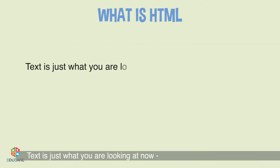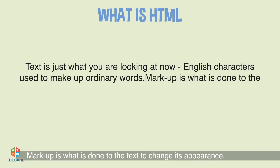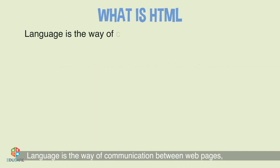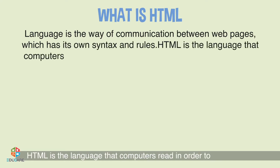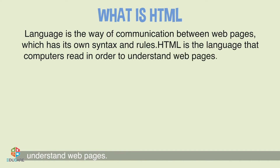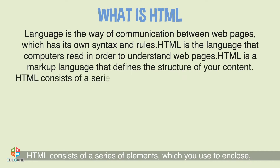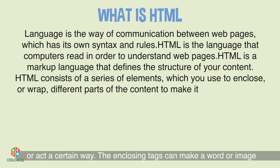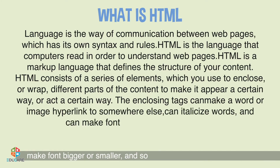Text is just what you are looking at now — English characters used to make up ordinary words. Markup is what is done to the text to change its appearance; for instance, text can be displayed in different colors. Language is the way of communication between web pages, which has its own syntax and rules. HTML is the language that computers read in order to understand web pages. HTML consists of a series of elements which you use to enclose or wrap different parts of the content to make it appear or act a certain way. The enclosing tags can make a word or image a hyperlink, can italicize words, and can make font bigger or smaller.